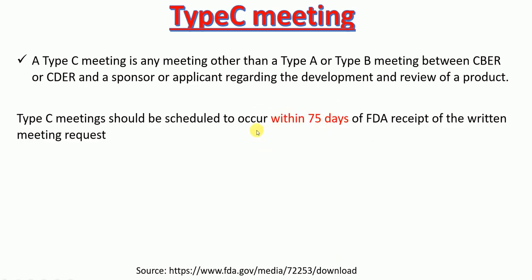Type C meetings are any meeting other than Type A or Type B between the Center for Biologics Evaluation and Research (CBER) or the Center for Drug Evaluation and Research (CDER) and a sponsor or applicant regarding the development and review of a product. Type C meetings should be scheduled to occur within 75 days of FDA receipt of the written meeting request.